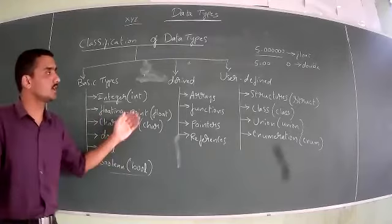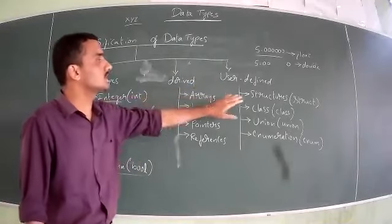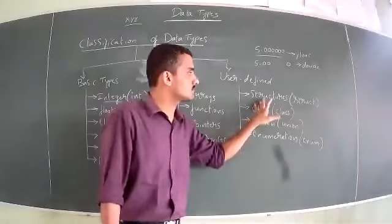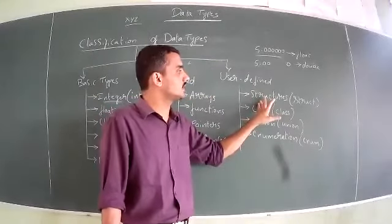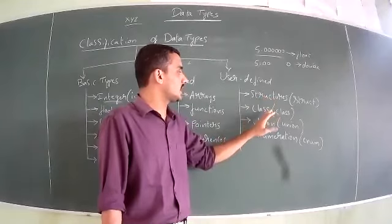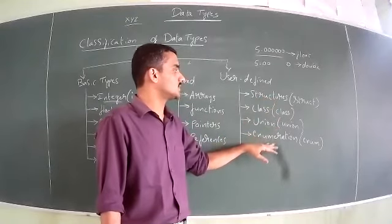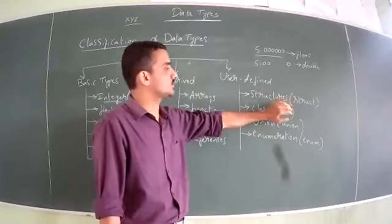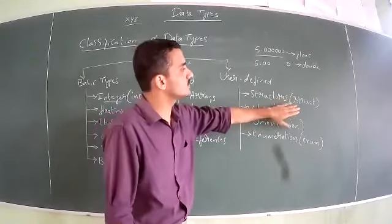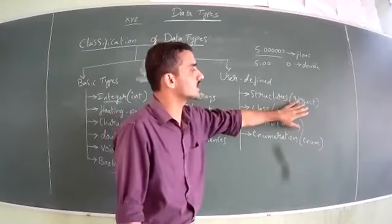Coming to derived types, we have individual structures for Array, Functions, and Pointer. And coming to user-defined types, we have Structure, Class, Union, and Enum. For each of these you also have to remember the keyword. For structure we use keyword 'struct', for class we use keyword 'class', and you must always write keywords in lowercase — that is the rule.